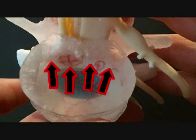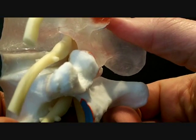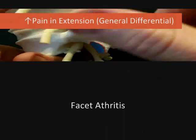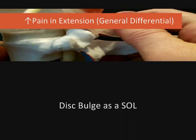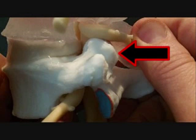Under extension, there are a few things we should be thinking about with regards to pain generators. We have to be thinking about the facet primarily, as the facets imbricate. We have a disc bulge — we know that the disc will bulge more in extension, as we've seen with upright MRI. The IVF will also decrease in size. If there's inflammation in the facets, that will be a pain generator.